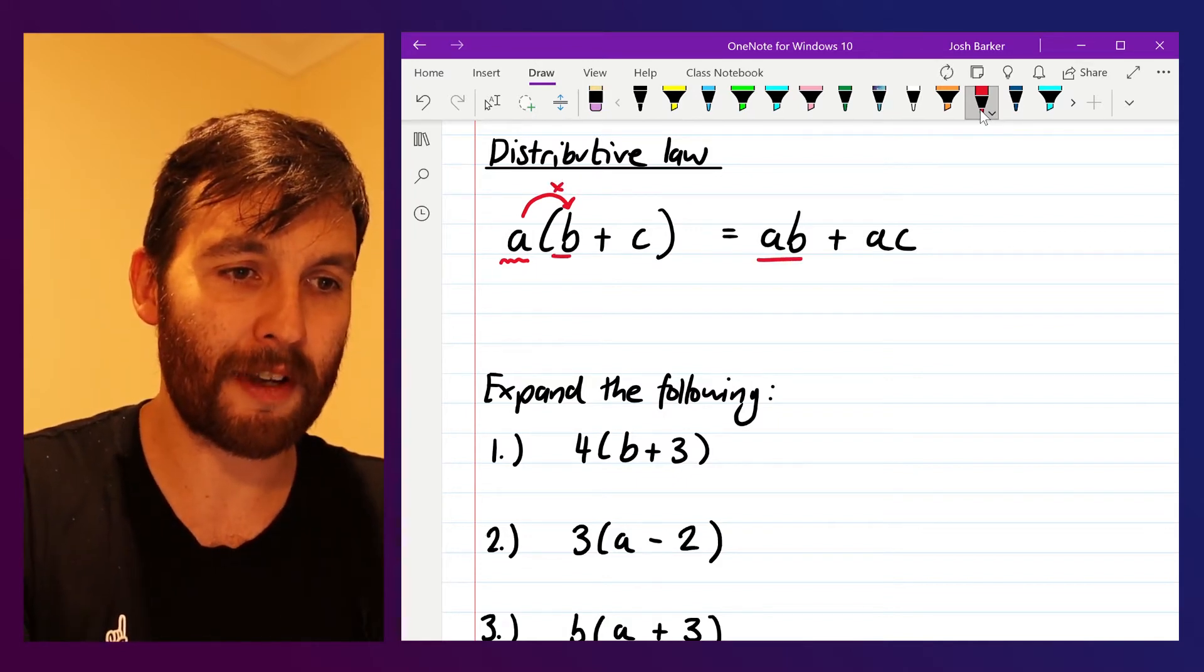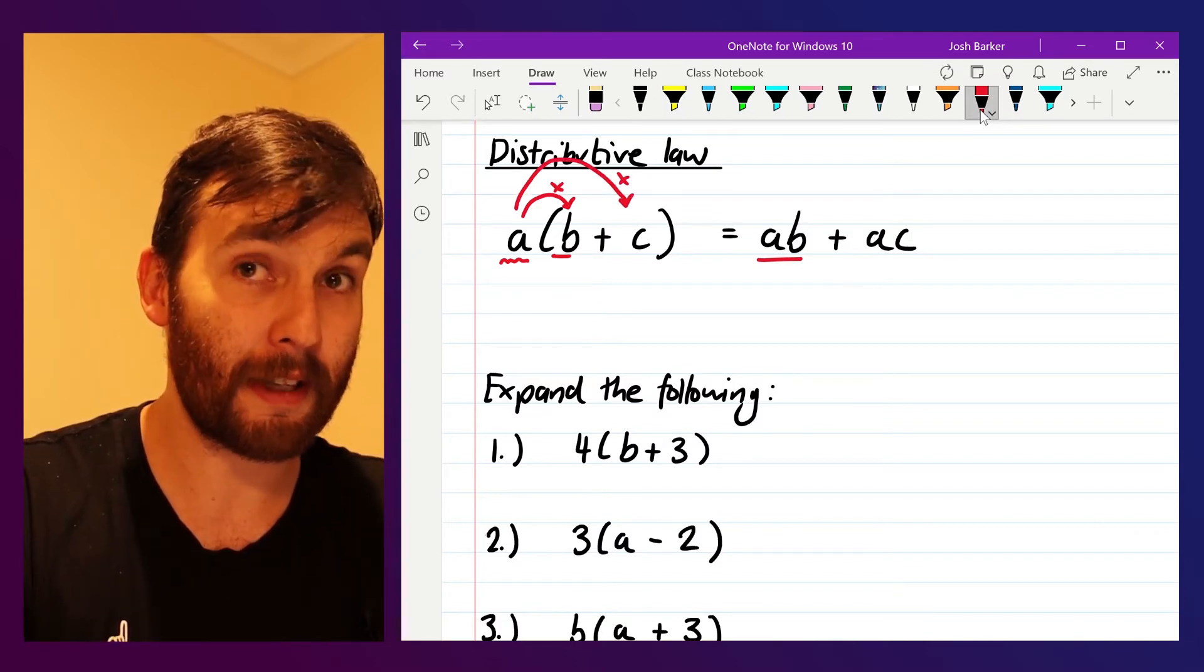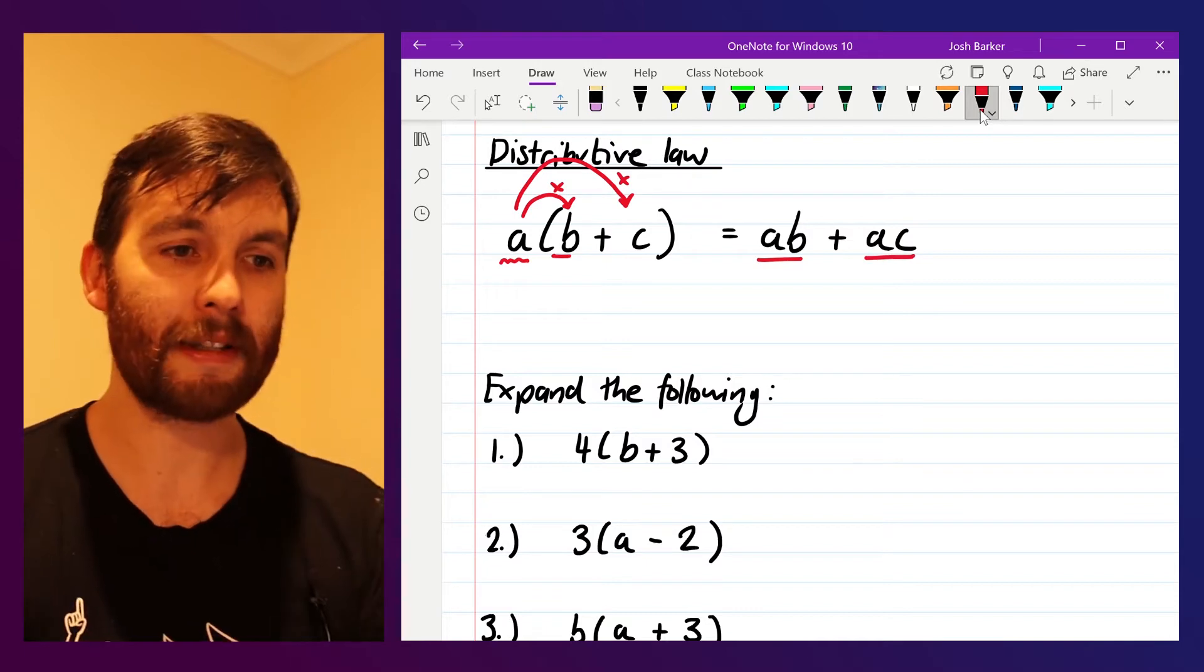So a multiplied by b will give us a times b, and a multiplied by c, positive c in this case, will give us a multiplied by c.